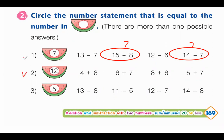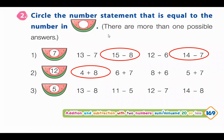Number 2: We have to find a number statement equal to 12. So 8 plus 4 equals 12 — circle it. Next, 5 plus 7 is also 12 — circle that one too. Both of those equal 12, so you have to circle both.